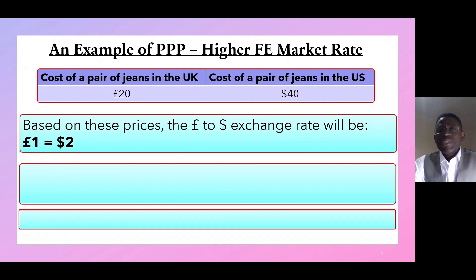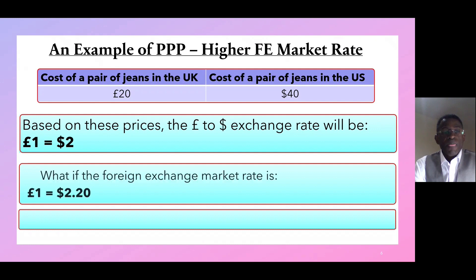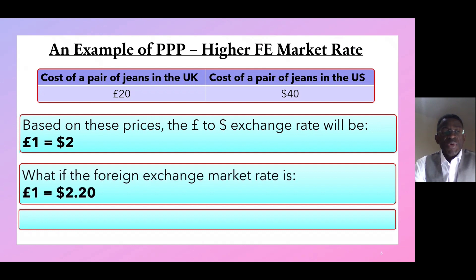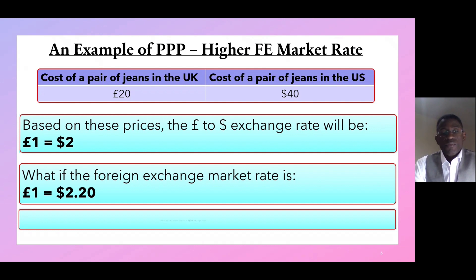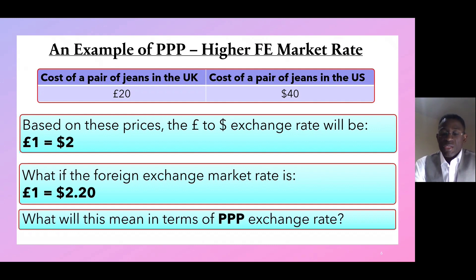Now let's look at a situation where the foreign exchange market rate is higher. Going back to the earlier example: the cost of jeans in the UK is 20 pounds, and the same pair of jeans in the US is 40 dollars, giving a prices exchange rate of one pound equal to two dollars. What if the foreign exchange market rate is one pound equivalent to two dollars and 20 cents? What would this mean in terms of the PPP exchange rate?